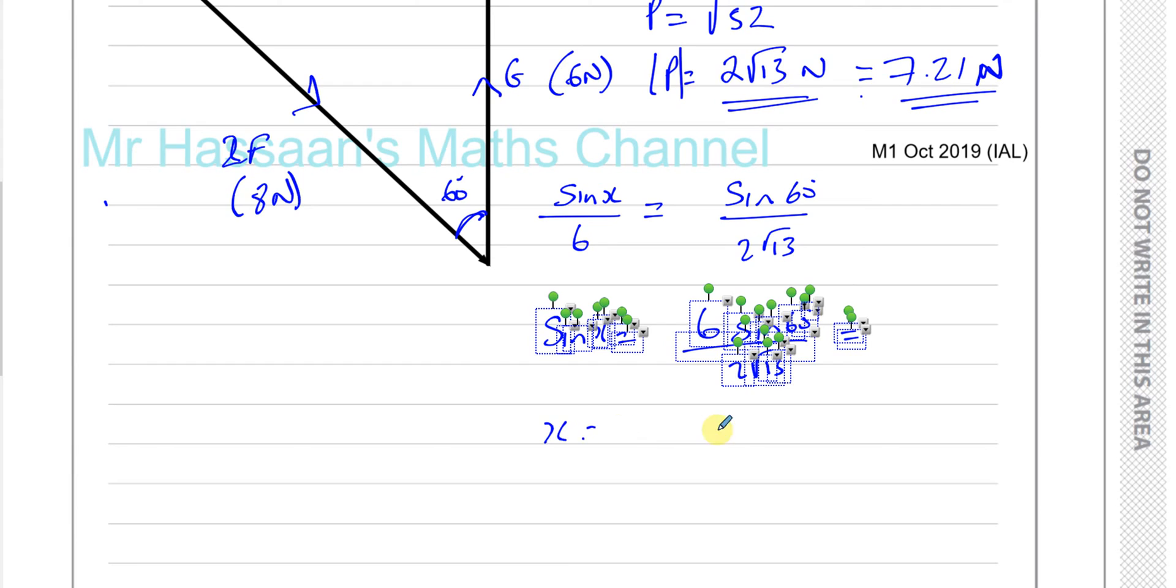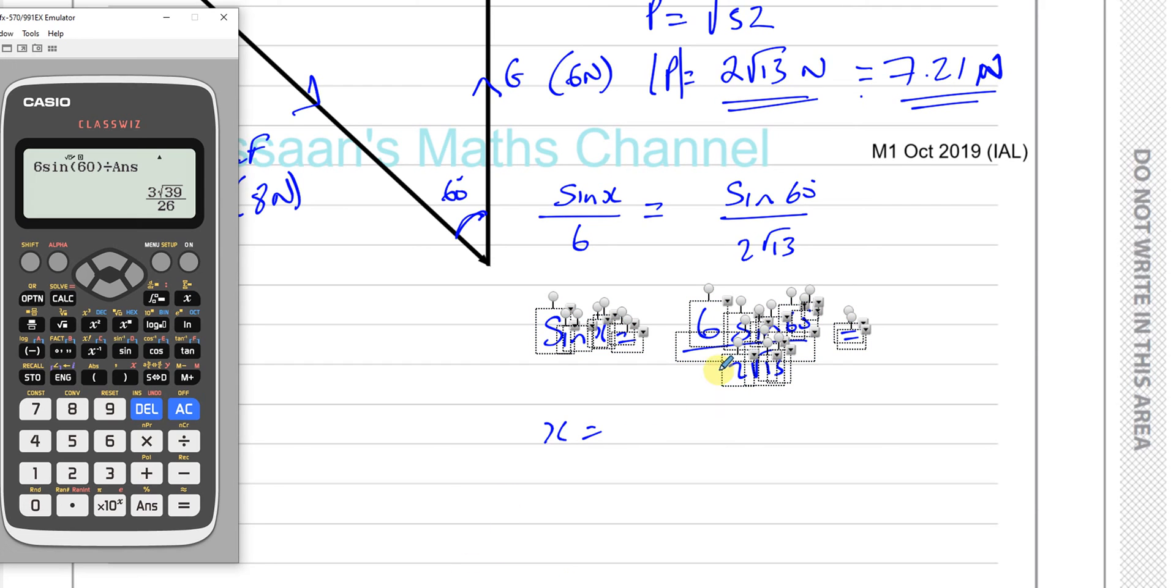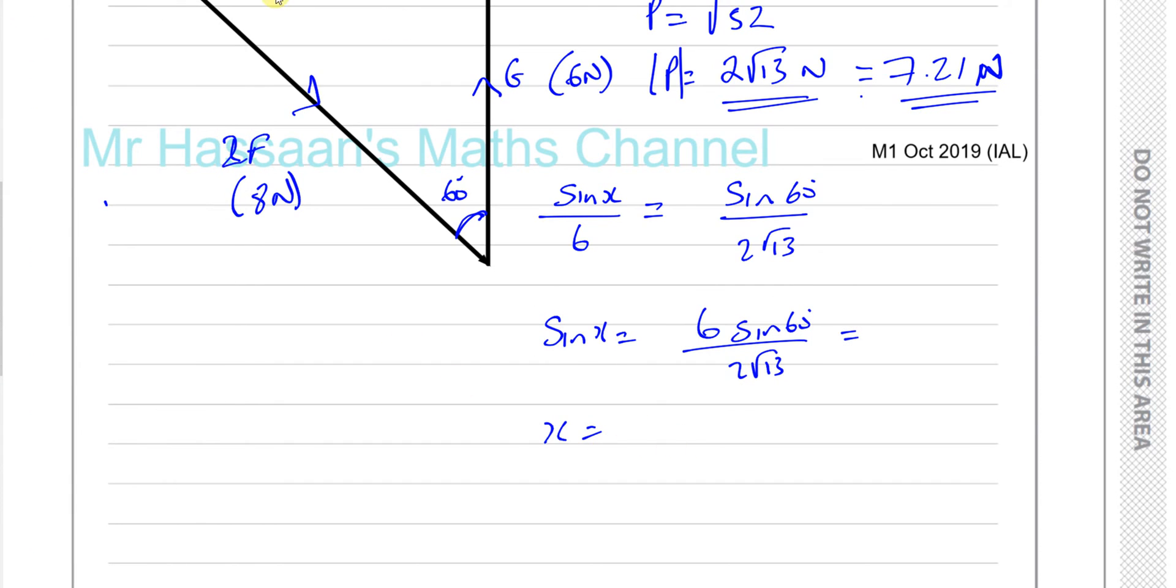Go ahead on there, one second. So X is going to be equal to, I don't know what's happened there. Anyway, it's equal to inverse sine of the answer, which gives us 46.102. So 46.102, 46.102 degrees.